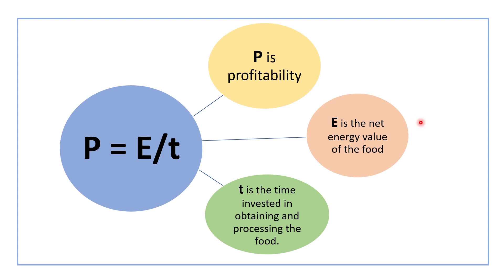E represents the net energy value of the food. Suppose an animal is foraging optimally and has a choice between two equally abundant food items — it will go for the item with the higher profitability P. This is the main idea of optimal foraging theory.